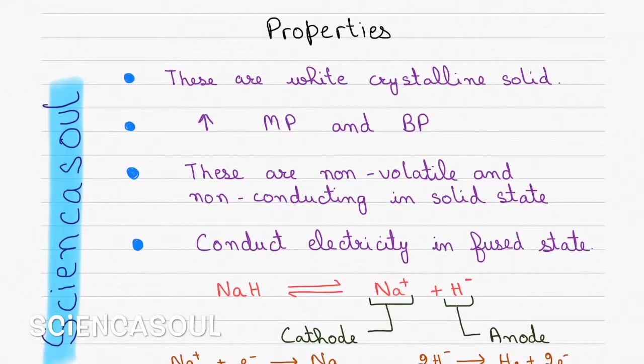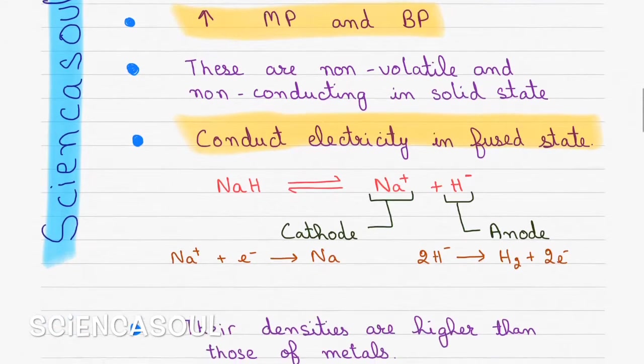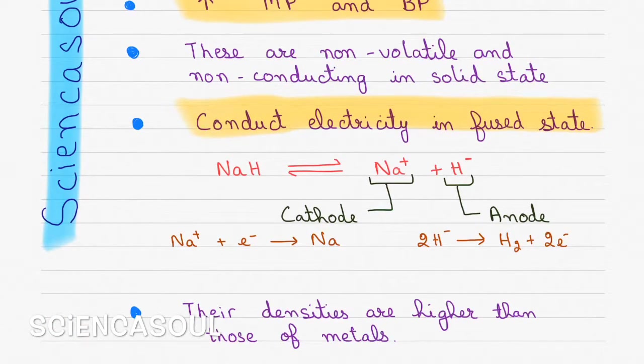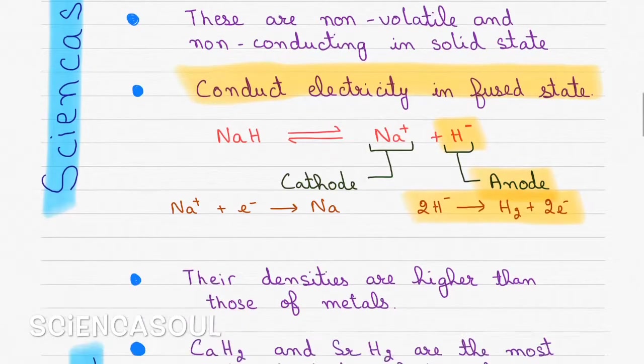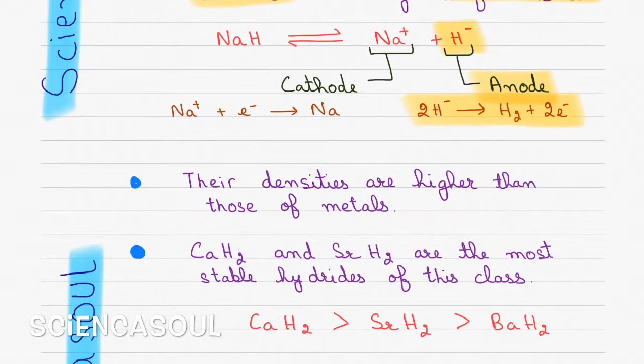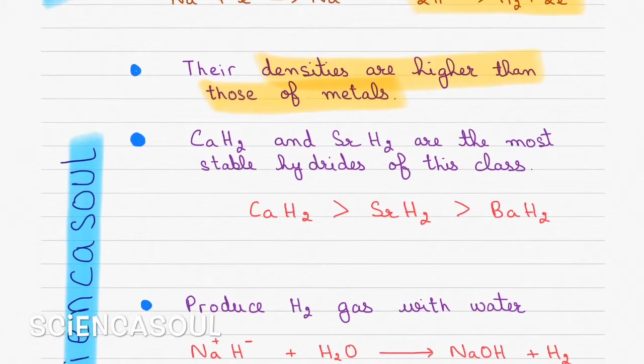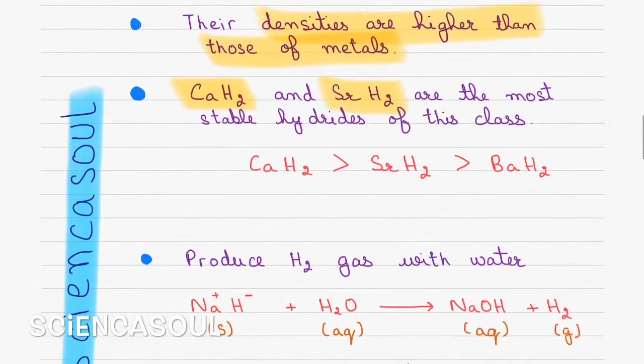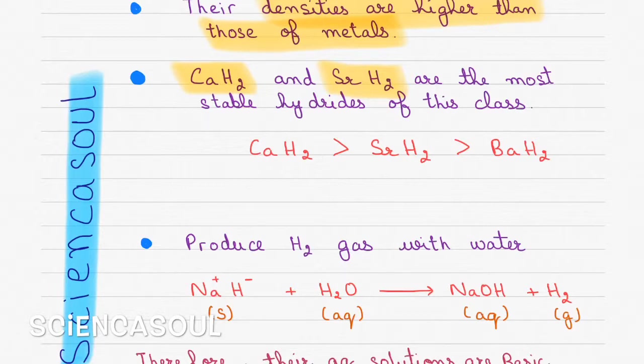Their properties are: these are white crystalline solid or may appear as gray crystalline solid. They have high melting and boiling points. These are non-volatile and non-conducting in solid state but conduct electricity in fused state, as you can see NaH gives Na positive plus H negative. H negative liberates at anode, which confirms the existence of H negative ion. Next, their densities are higher than those of metals from which they are formed. Next, CaH2 and SrH2 are the most stable hydrides of this class because their enthalpies of formation is high, so their stability is high.